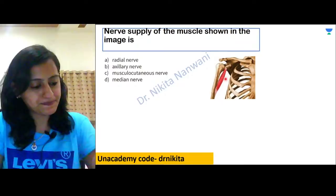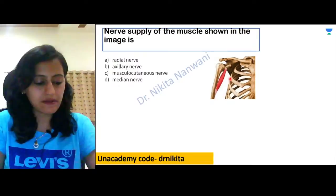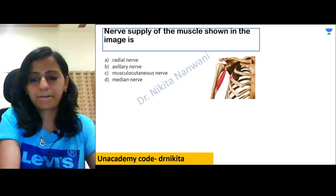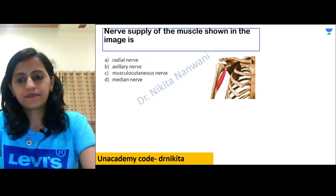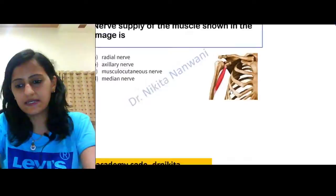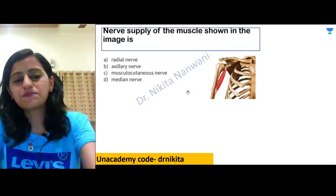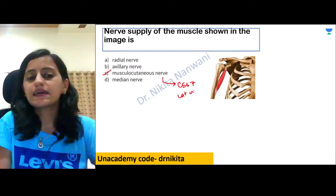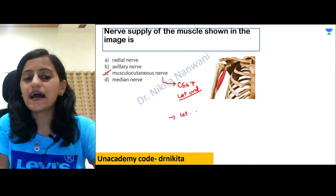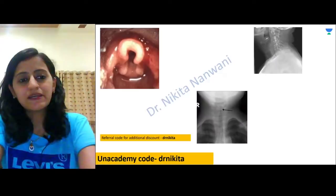Next question: what is the nerve supply of the muscle shown? This muscle attaches to the coracoid process — the atavistic epiphysis, part of the scapula — and is the coracobrachialis muscle. It is pierced by and supplied by the musculocutaneous nerve. Root value C5, C6, C7; it is a branch of the lateral cord of the brachial plexus, terminating as the lateral cutaneous nerve of the forearm.